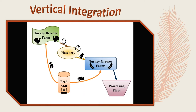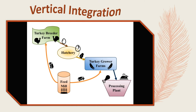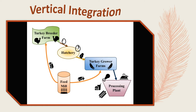The processing plant produces more than just whole turkeys. They can cut up turkey meat so you can buy just the parts that you want, like turkey drumsticks or turkey breast. The company can also take the turkey meat and make such things as turkey burger meat, turkey bacon, turkey lunch meat, and turkey hot dogs. So now you know how your turkey meat gets to your dinner table.